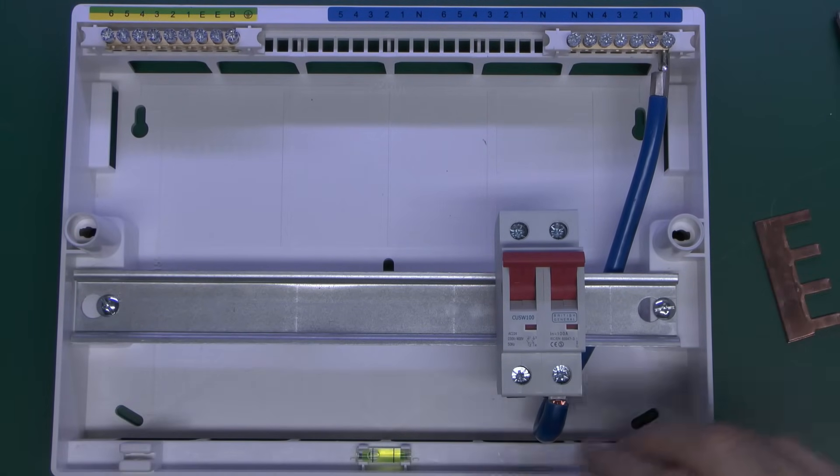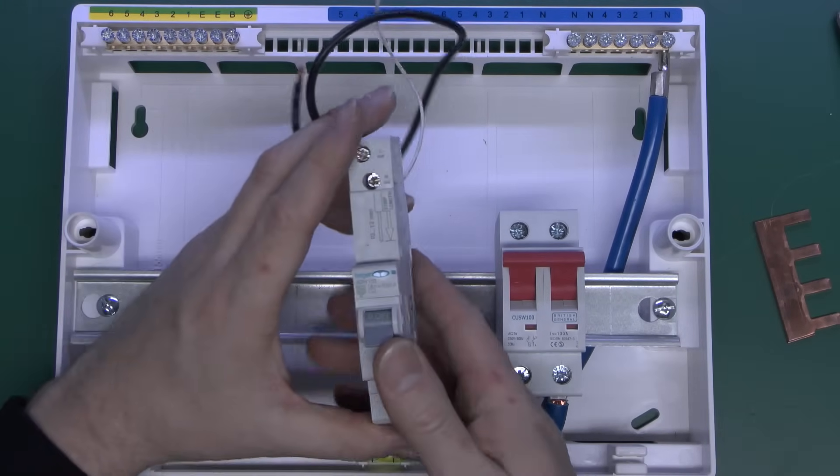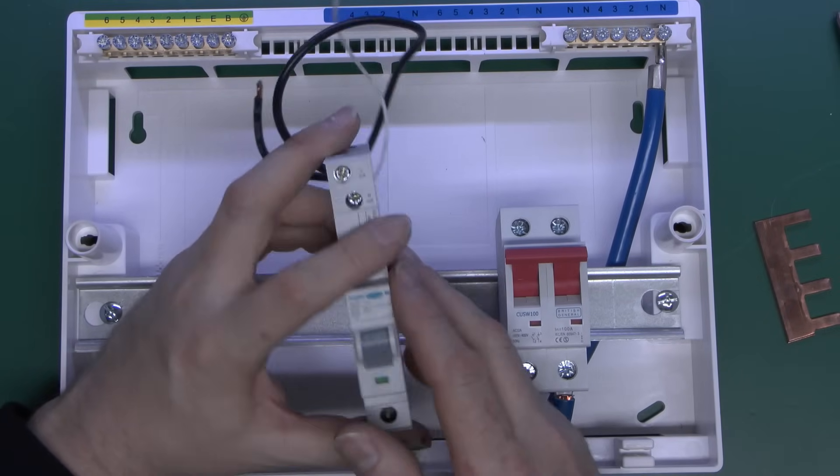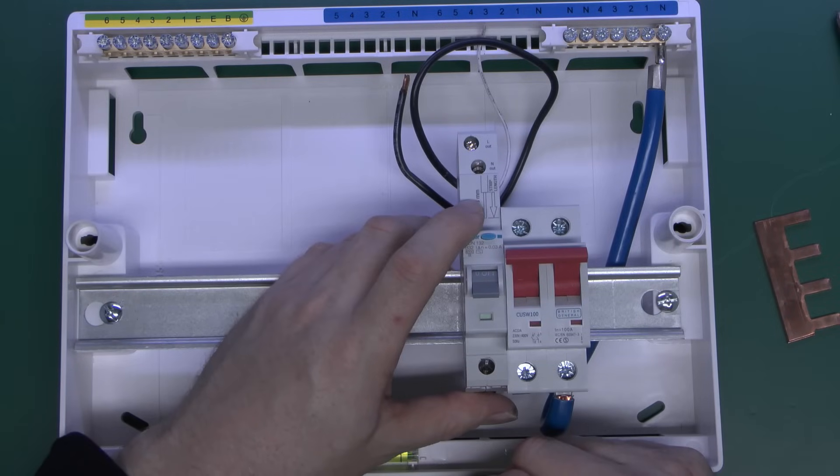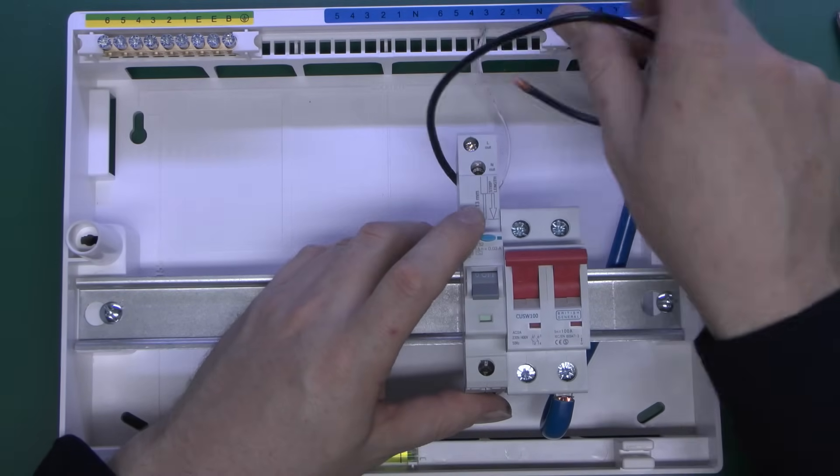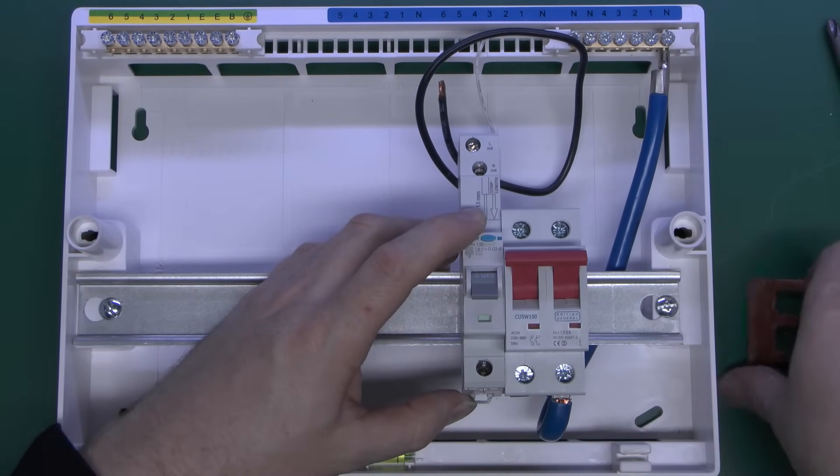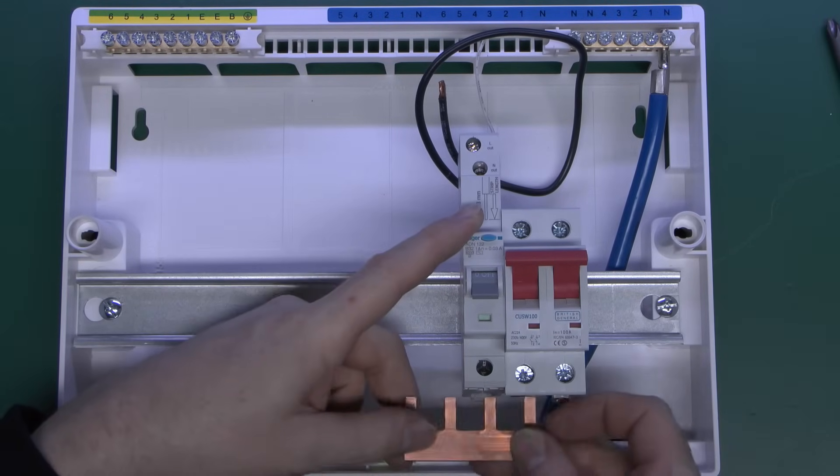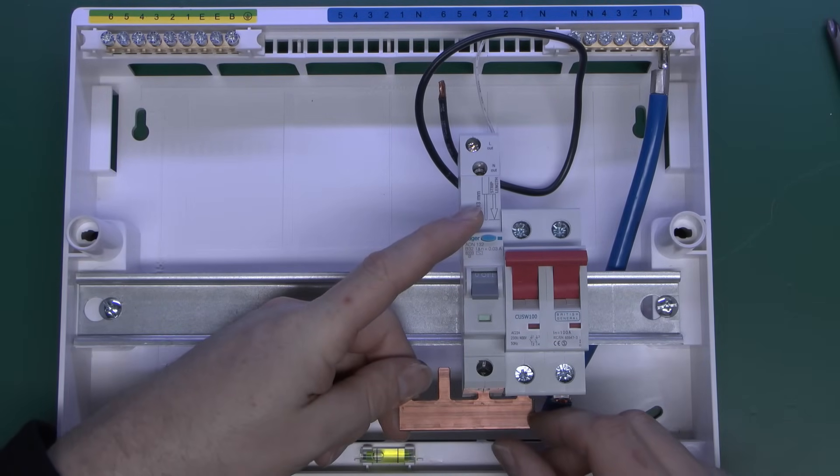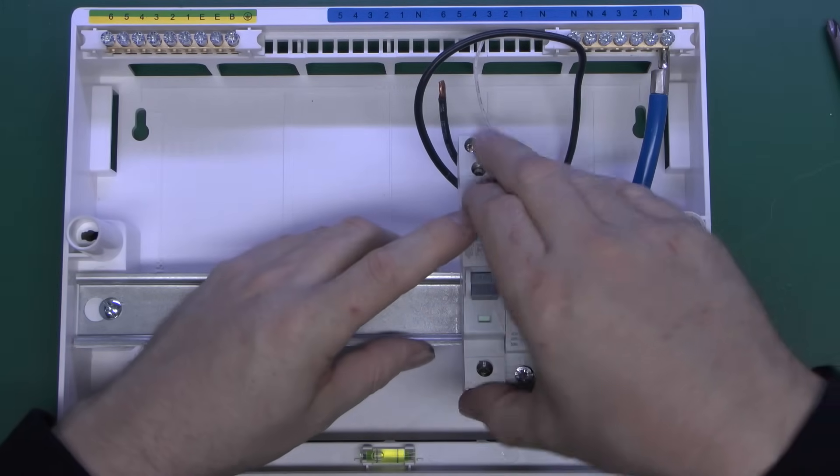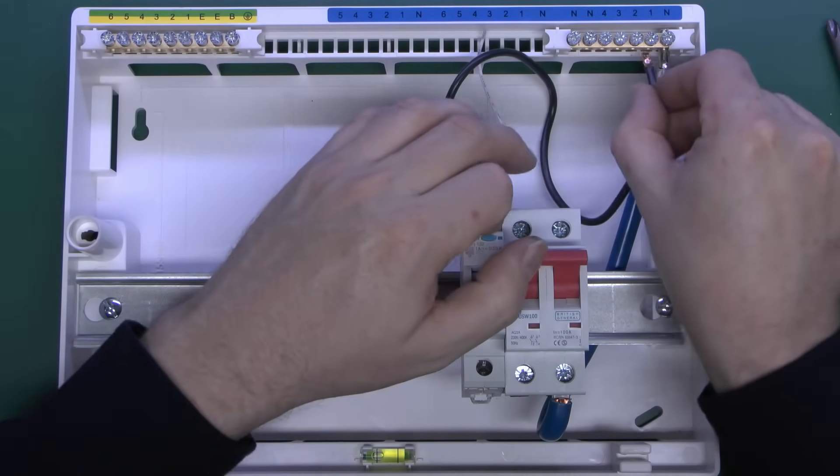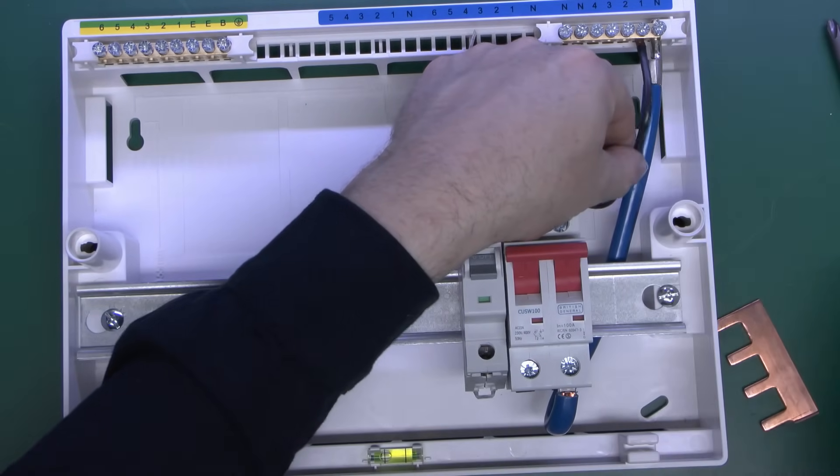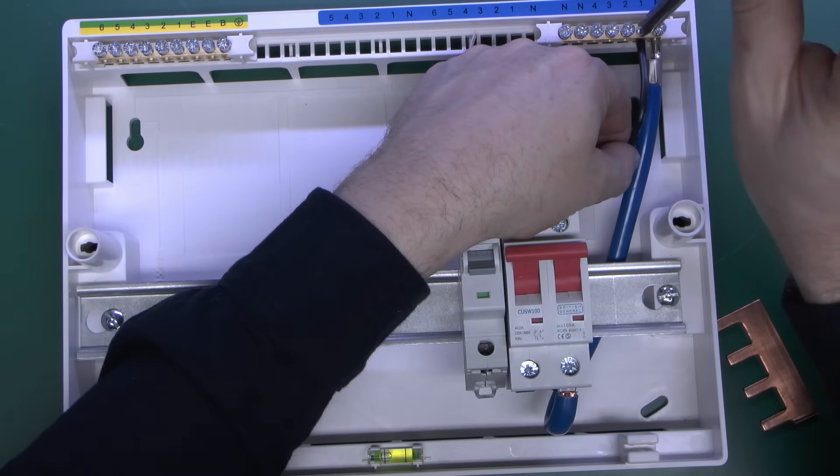However in the case of the RCBO because this has the RCD functionality built in it needs to monitor both the line and the neutral so again it just fits onto the rail in the same fashion. But as well as the line bus bar connecting here in the bottom just in the same way as the other devices we've also actually got this additional lead here which is for the neutral so that is what connects to the top here in the neutral bar.